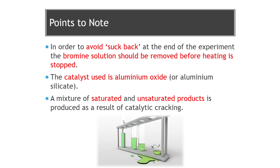The second important point is the name of the catalyst used. You need to remember this for your National 5 exam - the catalyst used is aluminium oxide. You could get a question on that in a test or final exam. Something else to note is that the final products are actually a mixture of saturated and unsaturated hydrocarbons, so you get a mixture of smaller, more useful alkanes and alkenes produced when we break up our large, less useful hydrocarbon.